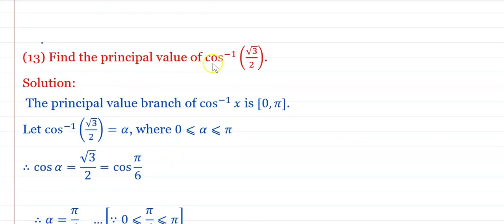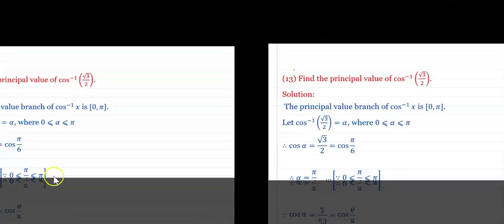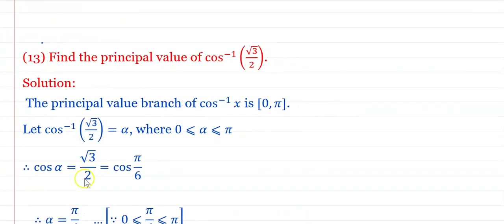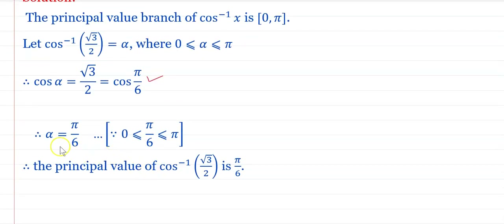Find the principal value of cos⁻¹(√3/2). The principal value branch of cos⁻¹(x) is [0, π]. Let cos⁻¹(√3/2) = α, where α ∈ [0, π]. Therefore cos α = √3/2, which gives α = π/6. Since π/6 ∈ [0, π], the principal value of cos⁻¹(√3/2) is π/6.